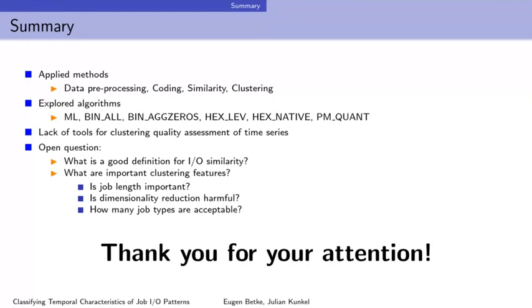My second question: you did groundwork applying machine learning to job characterization — is it something you think is reasonable to have online, or will it always have to be post-processing on a daily or weekly basis? We can do that after we have monitoring data, meaning after the job was executed, but almost directly after, because it works very fast — we just need complete monitoring data. So it's almost online.